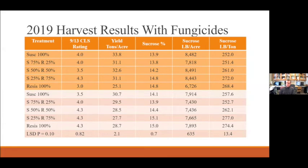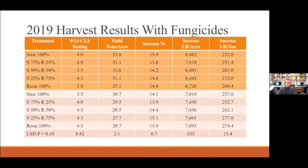When you move to the fungicide treatments, there was only one treatment significantly different from the 100% susceptible variety in the top set for CLS ratings, and that was the 100% resistant variety. In the yield column there were significant differences, with susceptible varieties performing better because we controlled the disease so well with fungicides — essentially taking disease out of the equation — and the susceptible variety was better absent outside influences. For sugar percentage, the resistant variety and blends of at least 50% were the best. In set two there were fewer significant differences overall, but the same pattern held in sugar percentage and sucrose per ton columns.